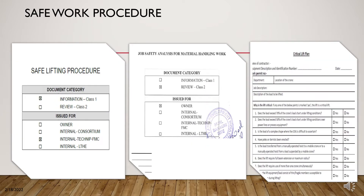Safe work procedures form one of the important parts of the engineering parameters of the Five E's of Safety. Under safe work procedures we have method statements or work procedures — documents prepared in advance to identify how a job should be executed in the safest manner. Job safety analysis identifies all risks and control measures. During execution, there should also be continuous inspection via checklists.